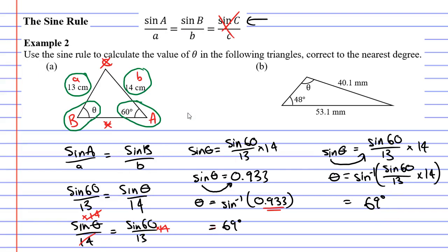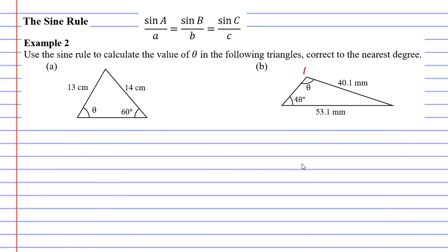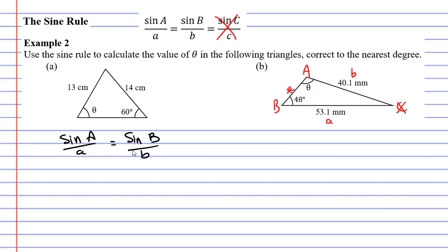You can choose which method you prefer — it might come down to how your calculator works. Now we move on to question B. I'll start by labelling the vertices capital A, capital B, and capital C. Then I'll label the lowercase letters opposite each capital letter. We're not using C here. I'll start on the left-hand side with the formula: sine capital A over lowercase a equals sine capital B over lowercase b.